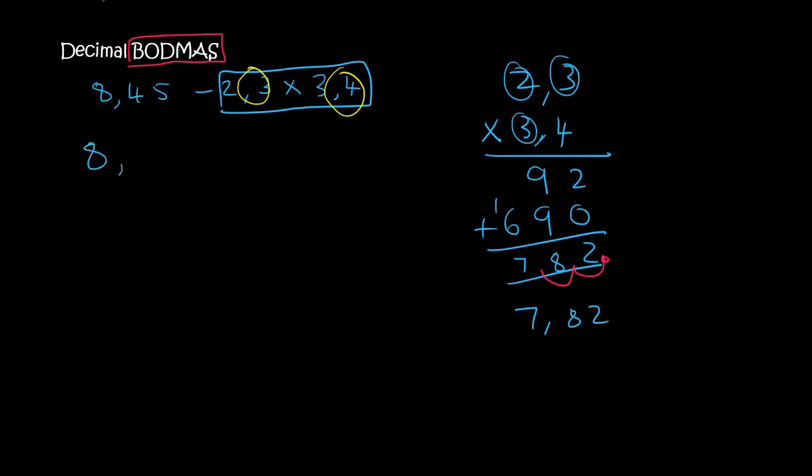So now what we have is 8.45 minus 7.82. When we are minusing, the comma places must be on top of each other. That is important. 5 minus 2 is 3. 4 minus 8, you can't. So you borrow. This becomes a 7. This becomes a 1. So now this becomes 14, not 5. So 14 minus 8 is 6. Then wherever you see the comma, you must put the comma. And then 7 minus 7 is 0. And so the answer for this entire sum is 0.63.